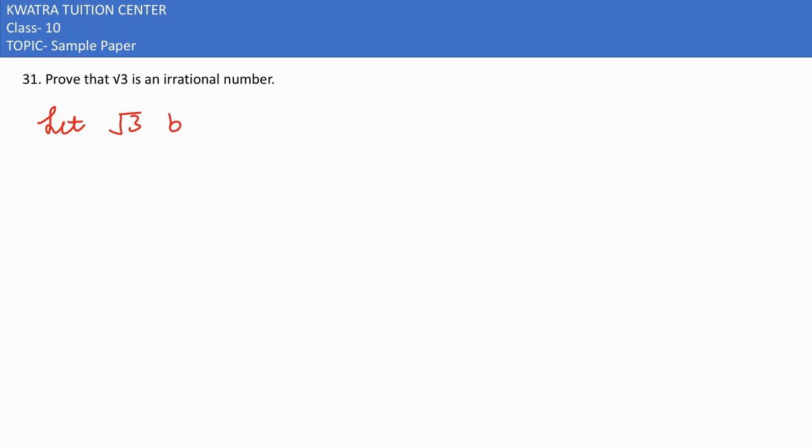Let √3 be a rational number. We will start with contradiction. We are going to consider that √3 is a rational number.